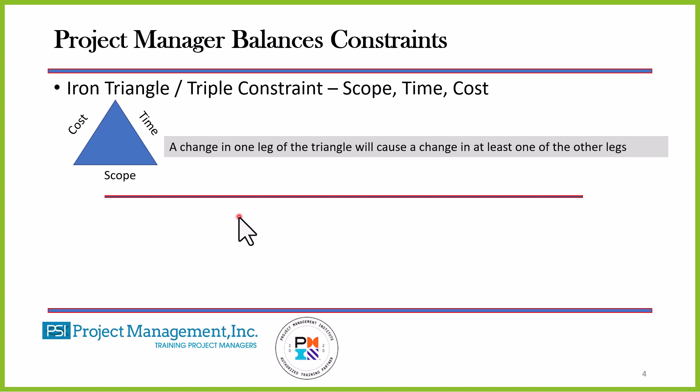Obviously, time is our schedule. A change in one of these legs of the iron triangle or triple constraint will drive a change in one of the other legs, or at least one if not both. So if I change scope, undoubtedly it's going to affect cost, and it probably will affect schedule at the same time.